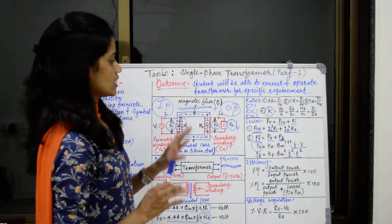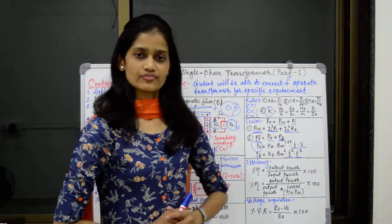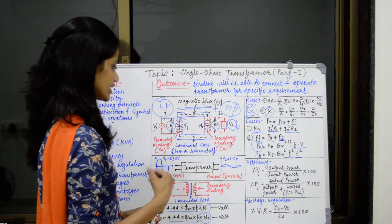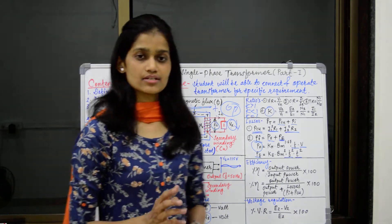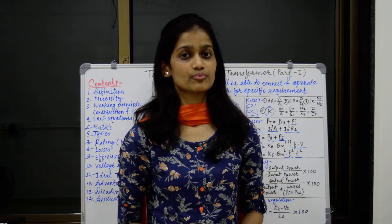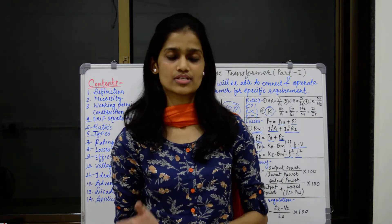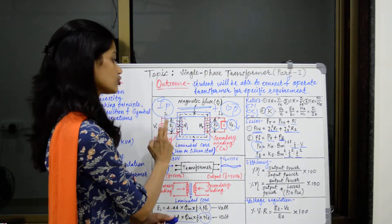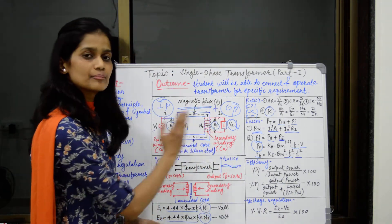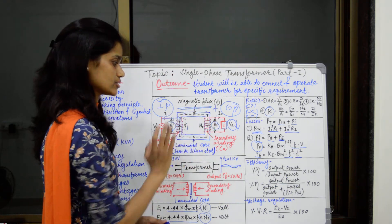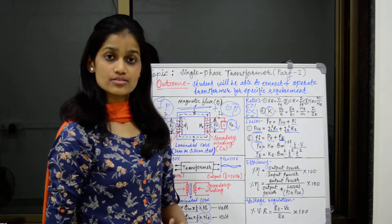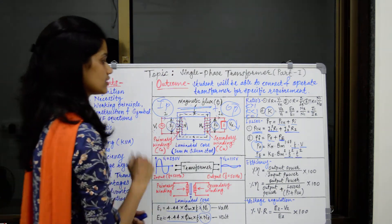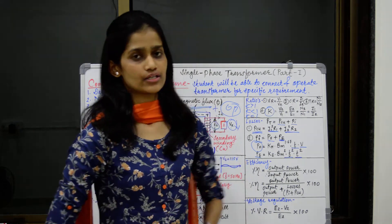Advantages of transformer: there are various advantages. First, the construction is very simple. Second, there is no moving part in a transformer, so friction losses are completely 0. Third, both primary and secondary windings are completely isolated and separated from each other, so there is no chance of a short circuit. And fourth, we can step up or step down the voltage using this transformer.